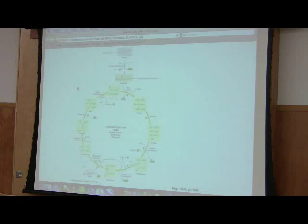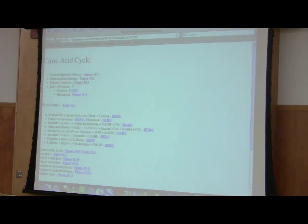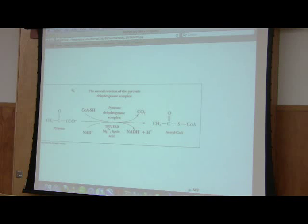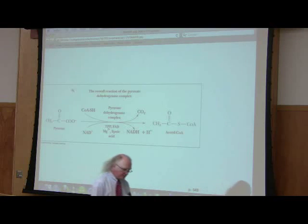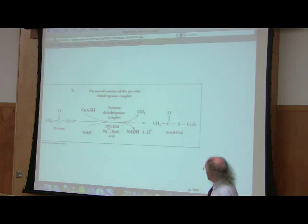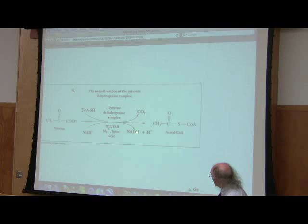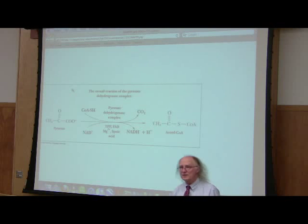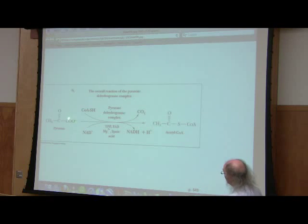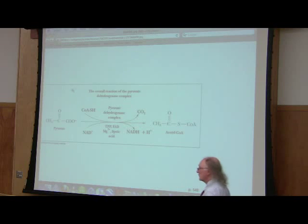Let's talk about the production of acetyl-CoA. This reaction shows us the production of pyruvate coming from glycolysis. Pyruvate is oxidized in a reaction that requires NAD, as almost all oxidation reactions in the cell do. It requires NAD and produces NADH. It also produces carbon dioxide, meaning one of those carbons is getting oxidized — specifically the carboxyl group, which is released as carbon dioxide.